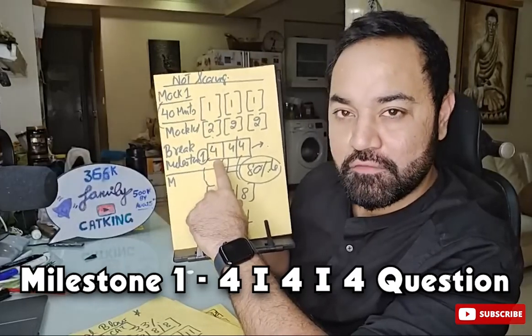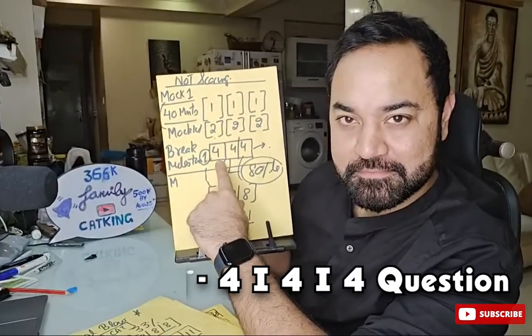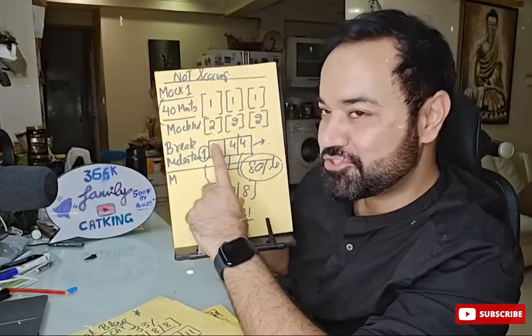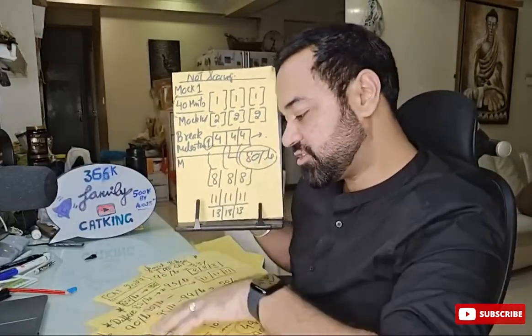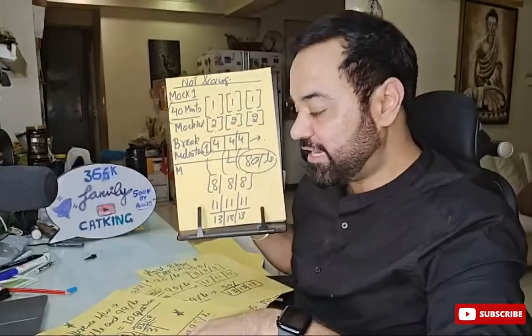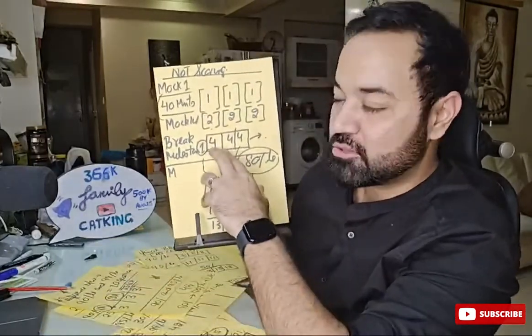Uske baad milestone number one is 4, 4, 4. Are you guys ready? Milestone number one is 4, 4, 4 question in each section. Because 4, 4, 4 question in each section is equal to how much? Is equal to 80 percentile in CAT. Or agar apne milestone number one kiya, chill karo thoda tha.